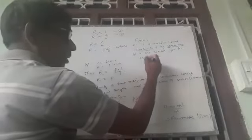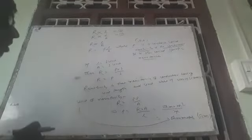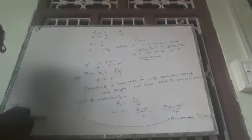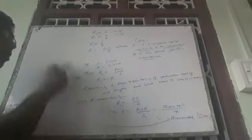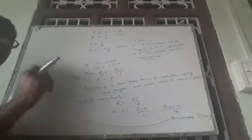This rho is also known as specific resistance. Now I have to define actually what is this resistivity. So if we take L equal to 1 unit means 1 meter length.